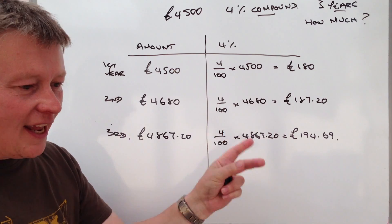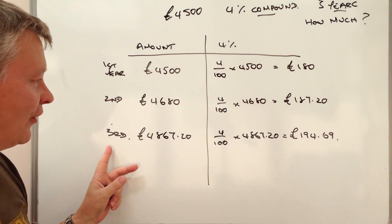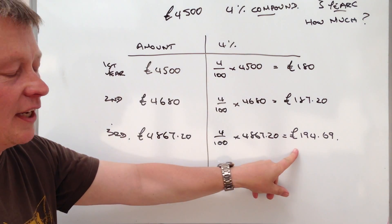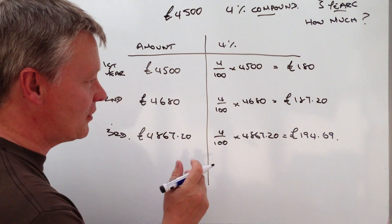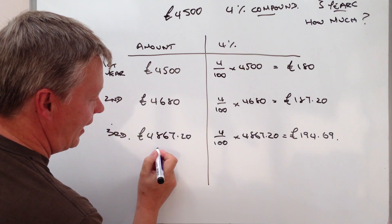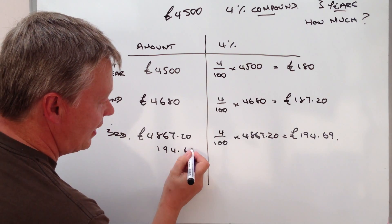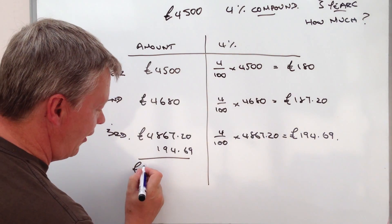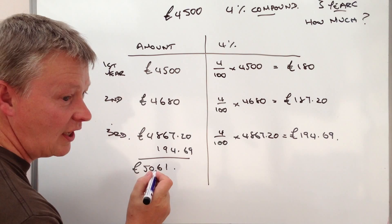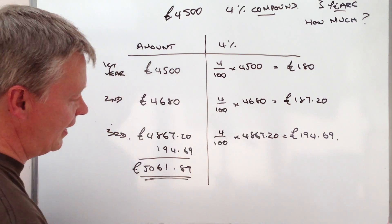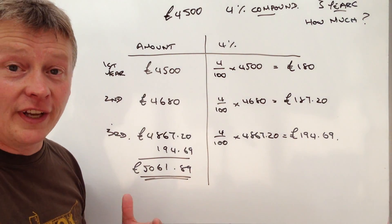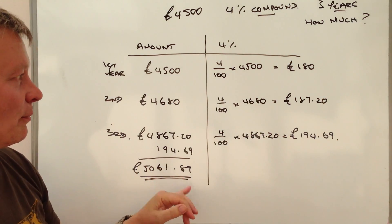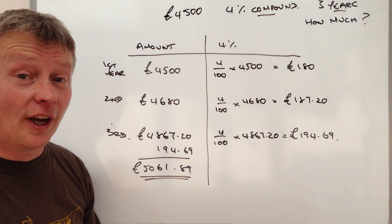So you can see at the end of the third year Raj is going to have a total of this amount plus the interest. So this amount plus the interest. So if I add that on it's going to be £194.69. Add it all together and, again referring to my notes, £5,061.89. And that will answer the question that at the end of the three year period the person has earned £5,061.89 from initial capital of £4,500.